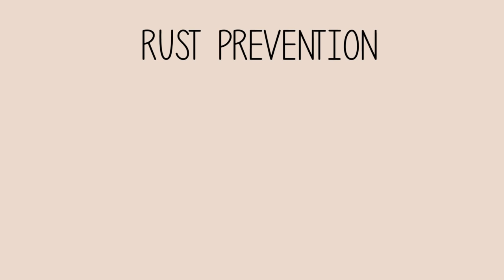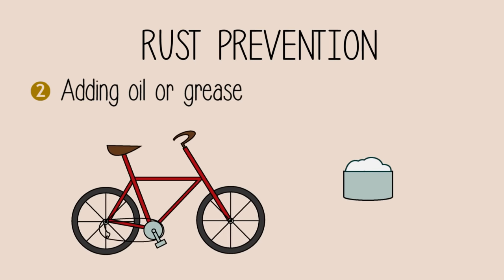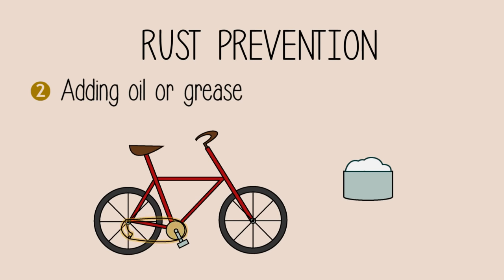Another method to prevent rust is by placing a layer of oil or grease. This is done on many bicycle chains. It helps lubricate the moving parts, which reduces friction and slows down the rusting process.